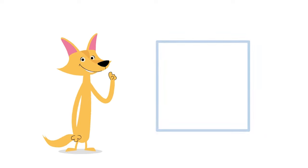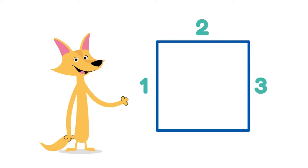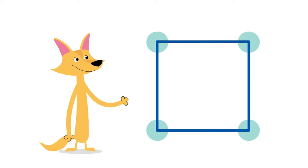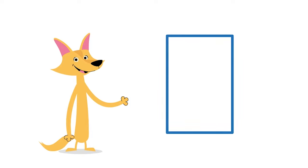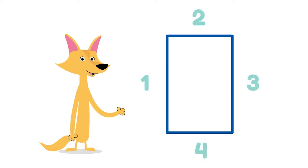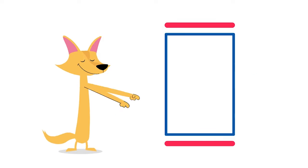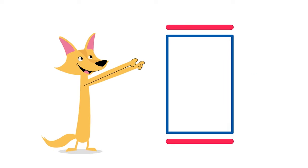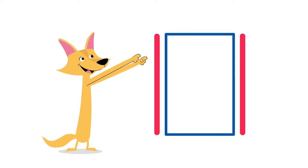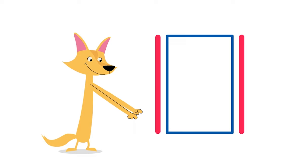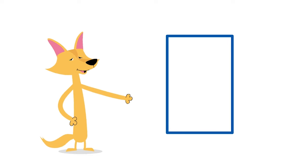A square has four equal sides and four corners. A rectangle has four sides and four corners. The opposite sides are parallel. Shapes are so neat!